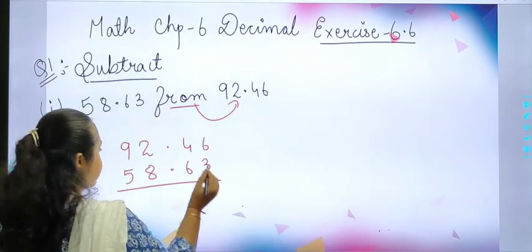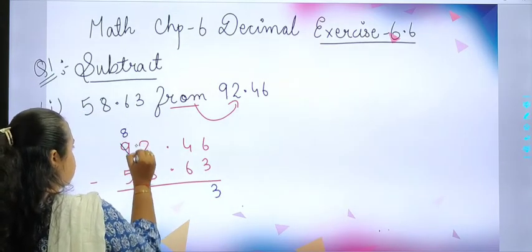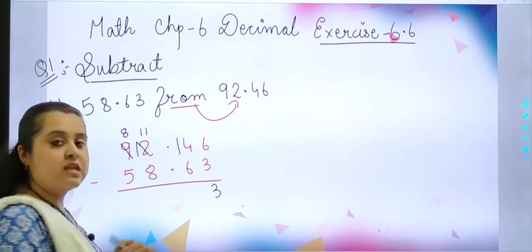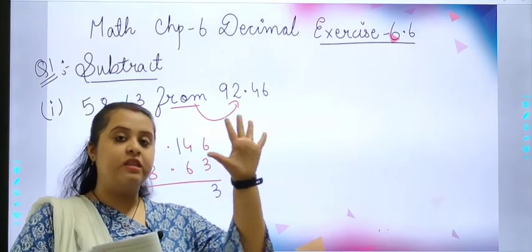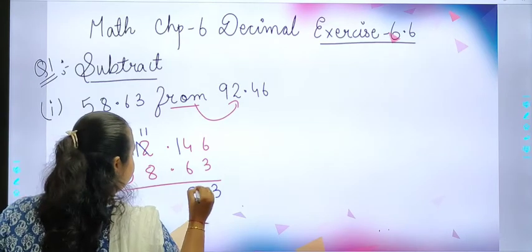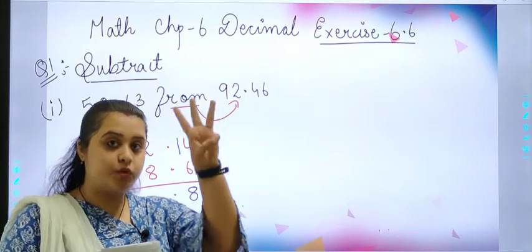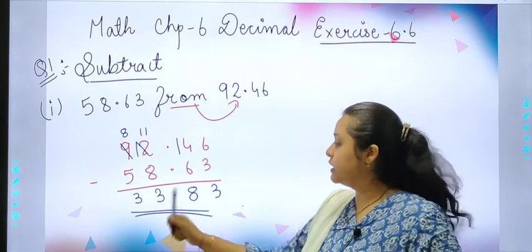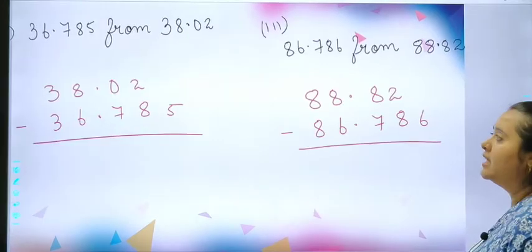6 minus 3 is 3. This 9 will become 8. This 12 will become 11. And this 4 will become 14. So counting: 6, 7, 8, 9, 10, 11, 12, 13, 14. That means 8. Then 3. So your answer will be 33.83. Done. Let's move to the next sum.